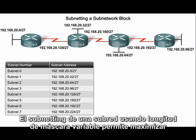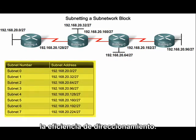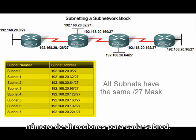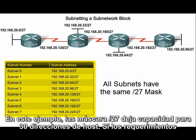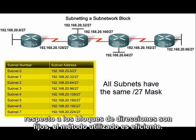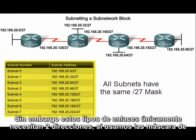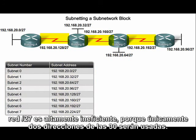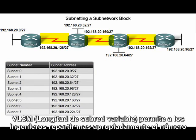Subnetting a subnet, or using variable length subnet masks, enables networkers to maximize addressing efficiency. When identifying the total number of hosts using traditional subnetting, we must allocate the same number of addresses for each subnet. In this example, the slash 27 mask leads to subnets capable of addressing 30 hosts. However, these WAN links only need two addresses, so using a slash 27 mask for WAN links is highly inefficient because only two of the 30 available addresses are being used.